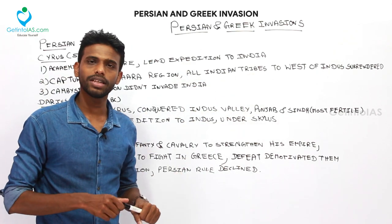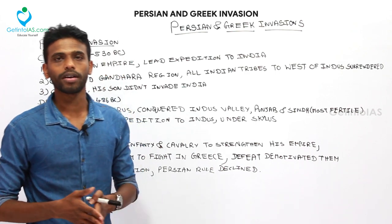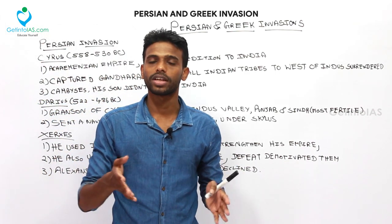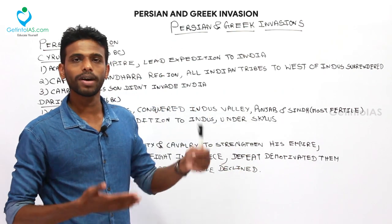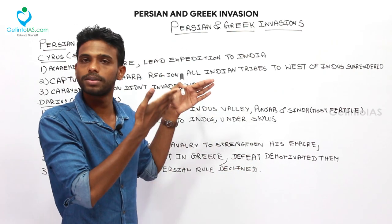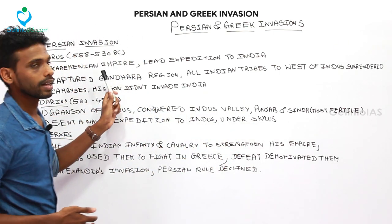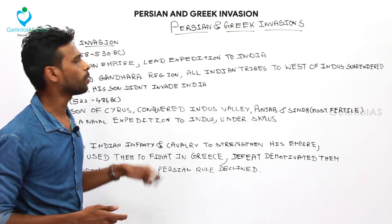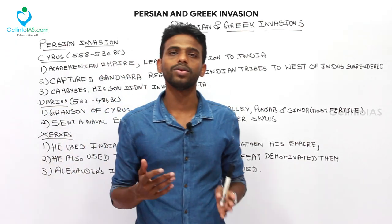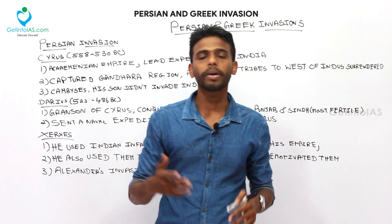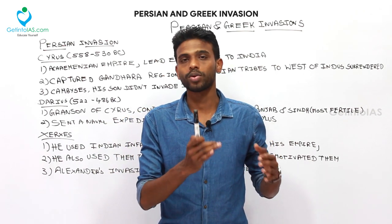At this time, in the middle Gangetic plains there were Magadha emperors, and the Mauryans were also rising — Chandragupta Maurya with Kautilya overthrew the Nandas. But the Persian kings were approaching from the northwest. They captured the Gandhara region, which was also mentioned in the Vedas, and all the Indian tribes to the west of India surrendered due to the bravery of Cyrus.